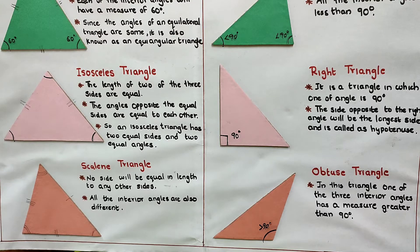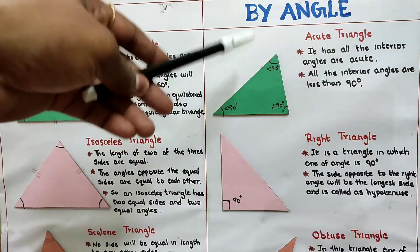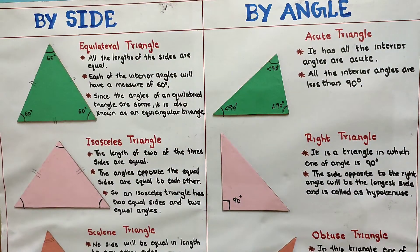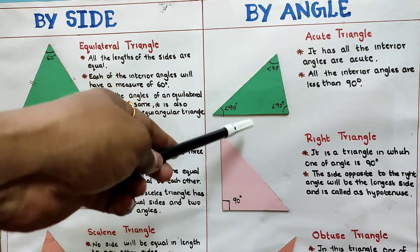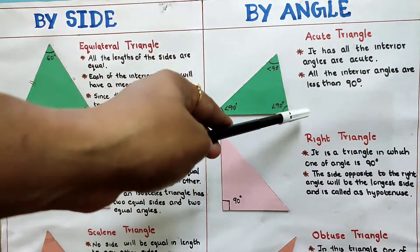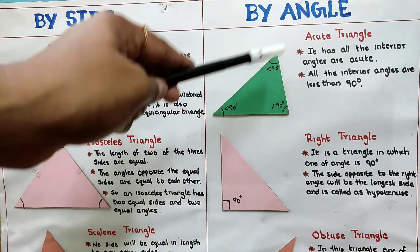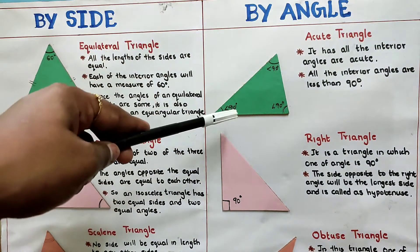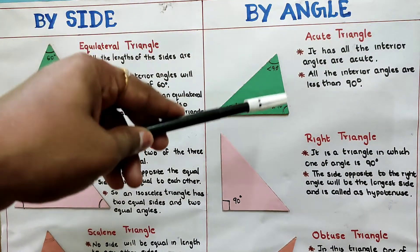Now we will see the classification by angle. The first one is acute triangle. For an acute triangle, all the interior angles are acute — that is, all the interior angles are less than 90 degrees. So that is the acute triangle.